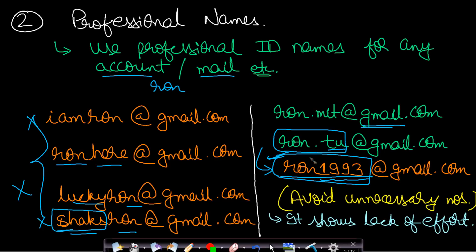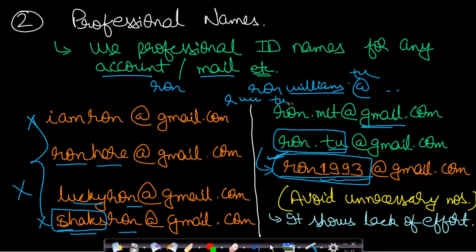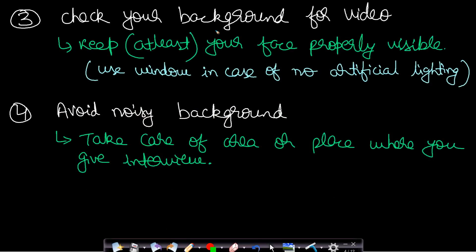Avoid unnecessary numbers in your email ID — like 'ron1993@gmail.com' — because this shows lack of effort. If 'ron.tu' is already taken, try 'ronwilliams@gmail.com' or 'rwilliams.tu@gmail.com' or any such combination. Your interviewer will think you have not put any effort in choosing a professional ID, giving a bad impression. So avoid unnecessary numbers.